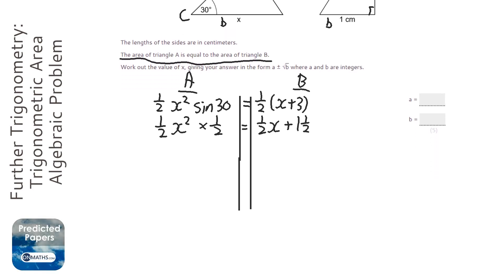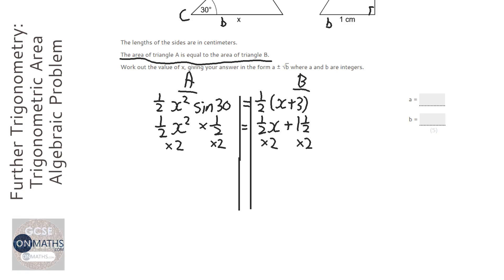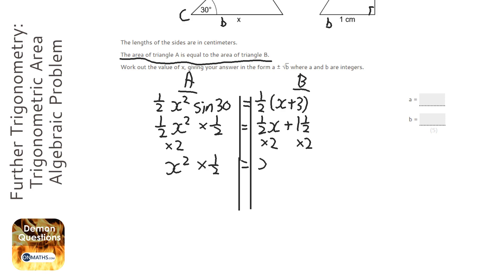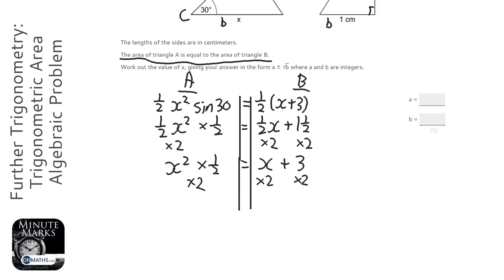Next, we're going to multiply everything by two — both sides. You've got to times everything by two, and anything separated by a plus or a minus you have to multiply by two. So we get x squared times a half equals x plus three. Then we multiply everything by two again to get rid of the half, giving us two x plus six.